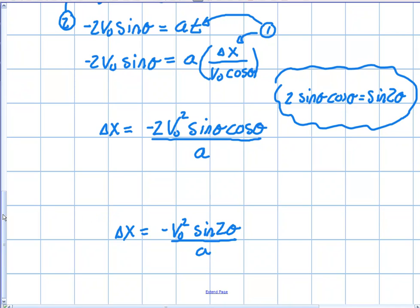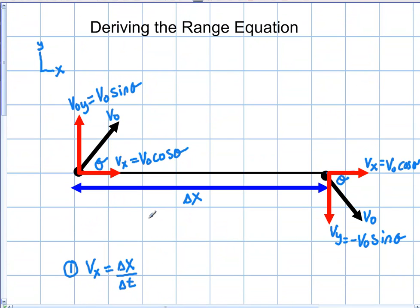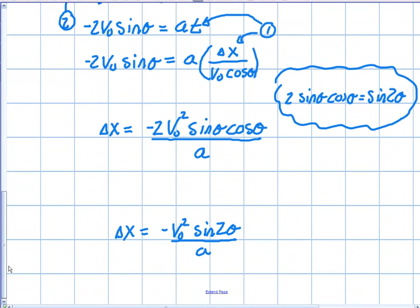An interesting way to remember this: in this type of problem you'll be given velocity, angle, and range — or two of these three and asked to find the third. I call this the VAR equation: Velocity, Angle, Range. If you have these three things, you use the range equation. You can think of this as the fifth kinematics equation for projectiles — we've talked about the four basic kinematics equations before, and this one works out very nicely for projectile problems.